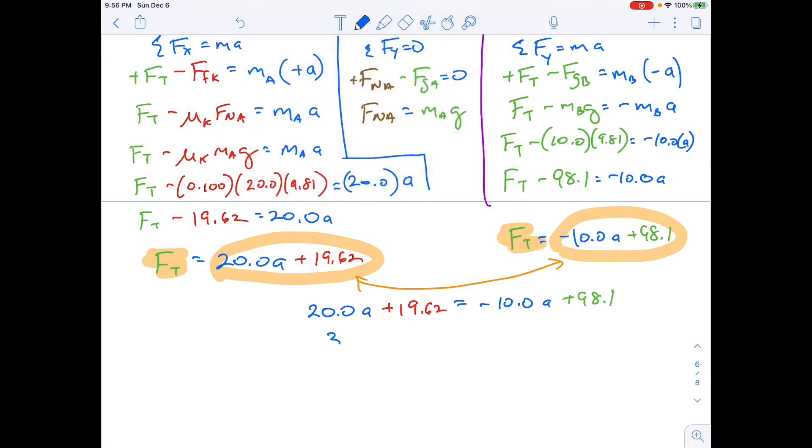And then when I do this, I'm going to get 30.0 A equals, I'm not going to color code because I'm going to merge these together. So 98.1 minus the 19.62, so I'll subtract those. And I'm going to get 78.5, roughly. And I'll take that and divide it by 30.